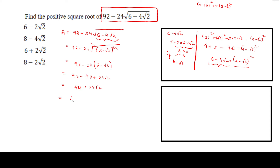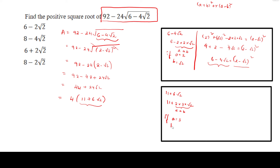Let's take 4 common: 4 times 11 plus 6 root 2. Now let's take this part, 11 plus 6 root 2. It can also be written as 11 plus 2 times 3 times root 2. If this is in the form of 2AB, with A equals 3 and B equals root 2, let us see which form we get.